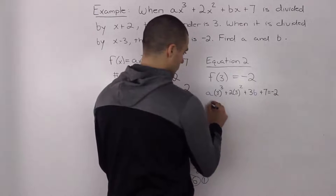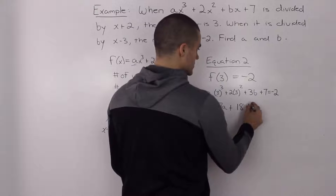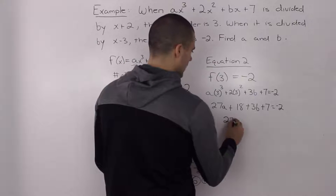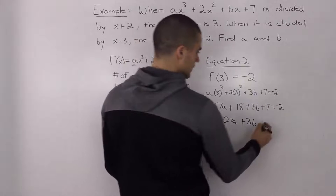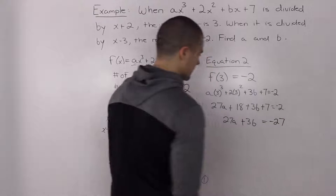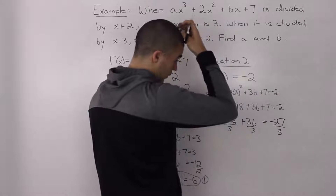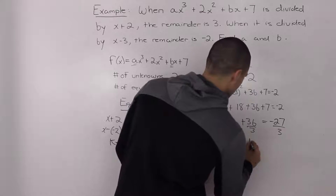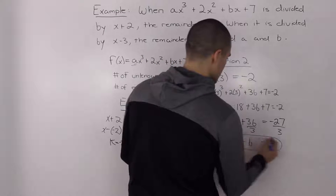Plugging in 3 for the x values of the dividend — the a and b's we still don't know — and that's equal to negative 2. Simplifying: 3 to the power of 3 is 27a, plus 3 squared times 2 is 18, plus 3b, plus 7, equals negative 2. Taking the 18 and the 7 over, we get negative 2 minus 7 minus 18, which gives us negative 27. Dividing everything by 3, since it's the greatest common factor, we get 9a plus b equals negative 9. This is our second equation.